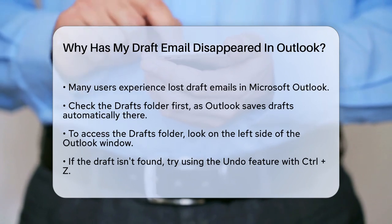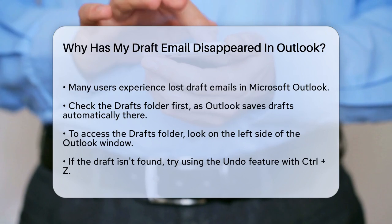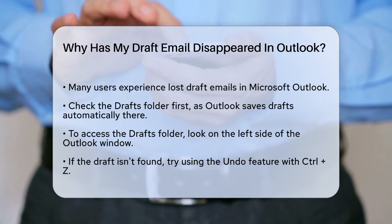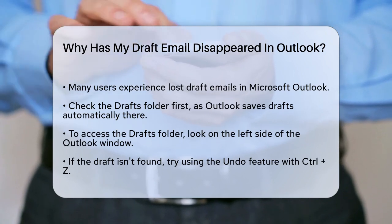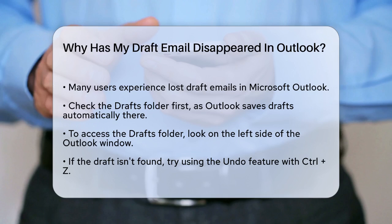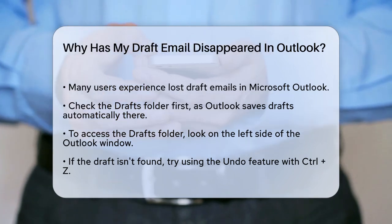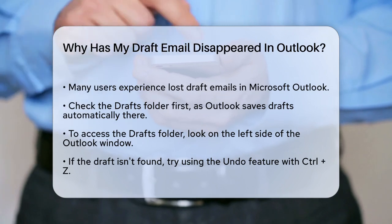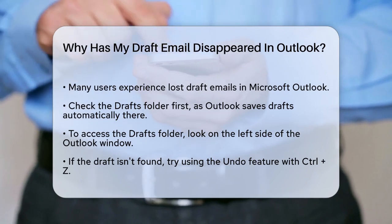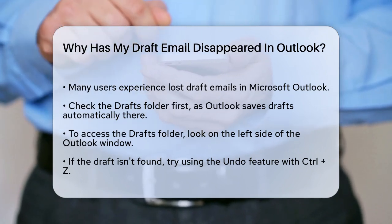One of the first places to check is the Drafts folder. Outlook automatically saves your email drafts in this folder, so it's likely that your draft is here. To find it, open Outlook, look at the left side of the window, and click on the Drafts folder. If you see your draft, you can continue editing or send it as needed.